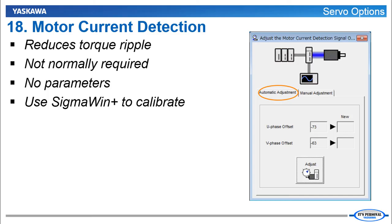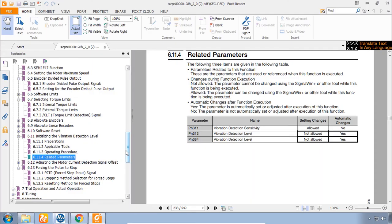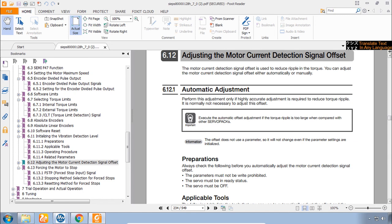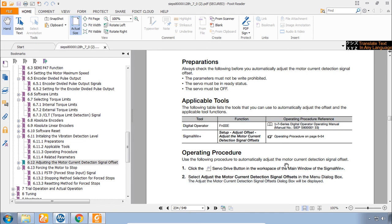And the final option we will discuss is the motor current detection. This is a fine tuning calibration that you can do on the motor to reduce torque ripple. You probably won't see any difference in the operation. It's not normally required. There are really no parameters to adjust and it can only be done through Sigma Win Plus. That's in the next section here of the manual 6.12 adjusting motor current detection signal offset. If you were to do a trace in Sigma Win Plus of the torque signal and you find that it's oscillating rippling. And you find that the ripple is large compared with the other servos. Then you might want to try this before you try to use a tuning to get rid of that torque ripple.